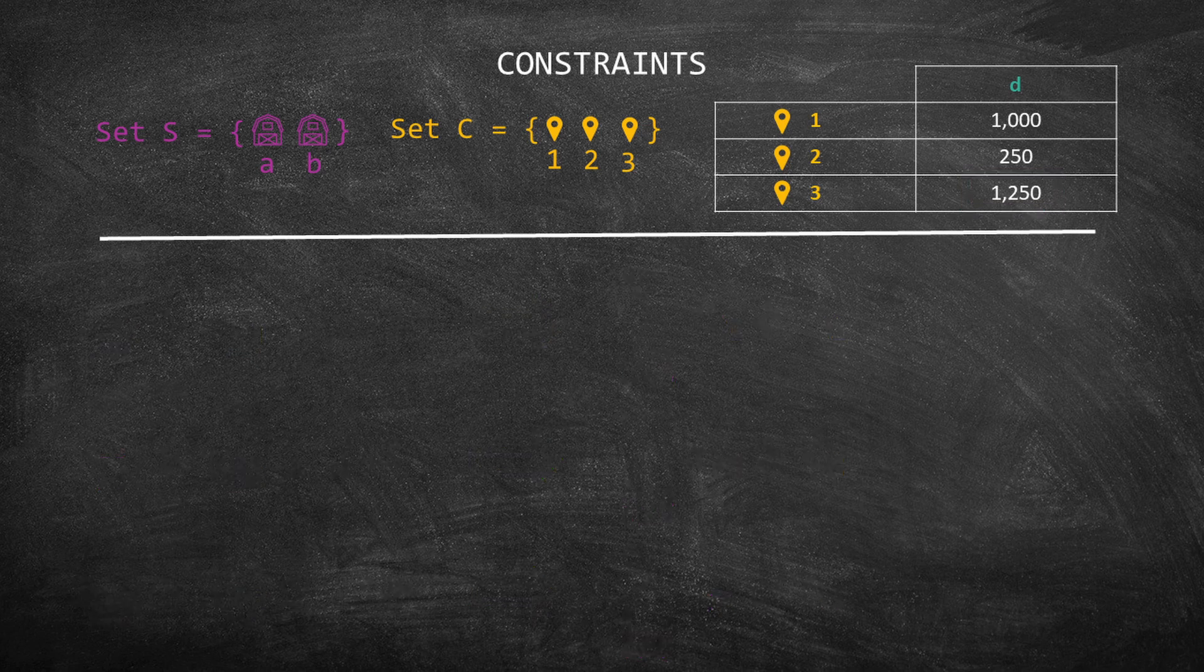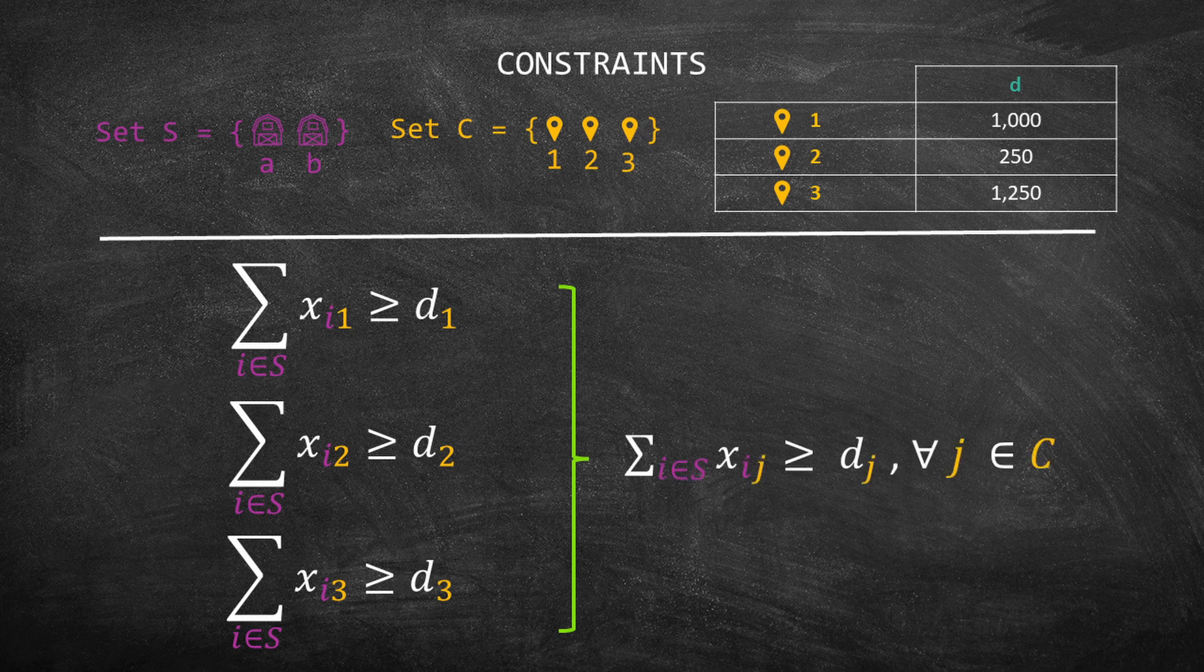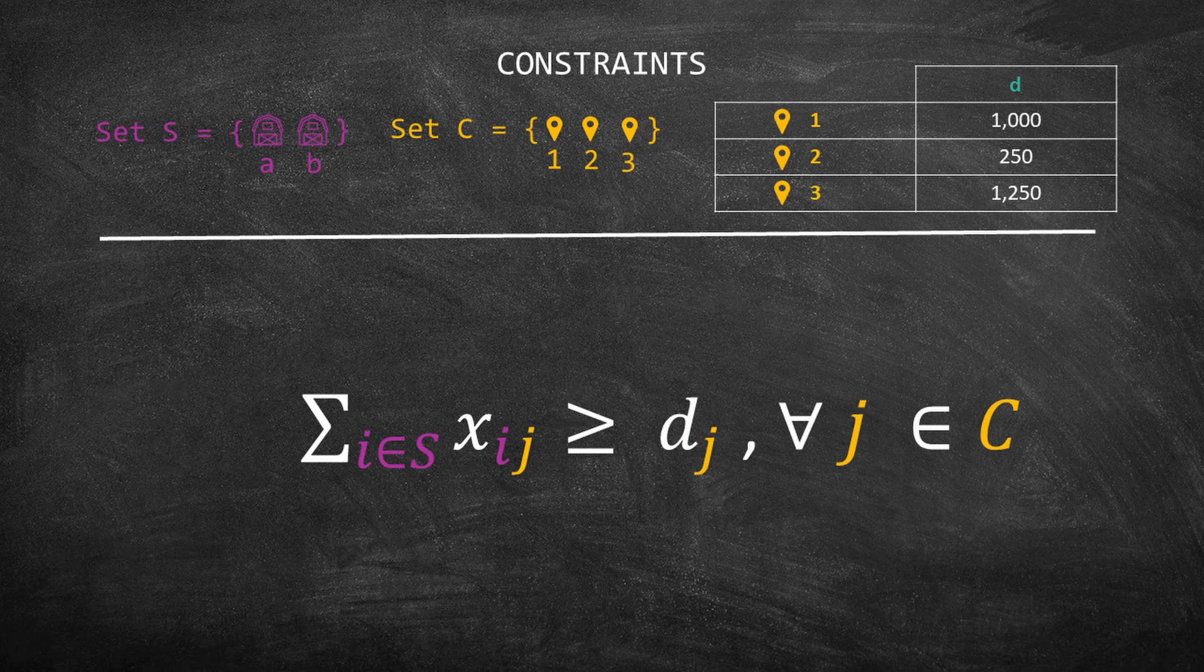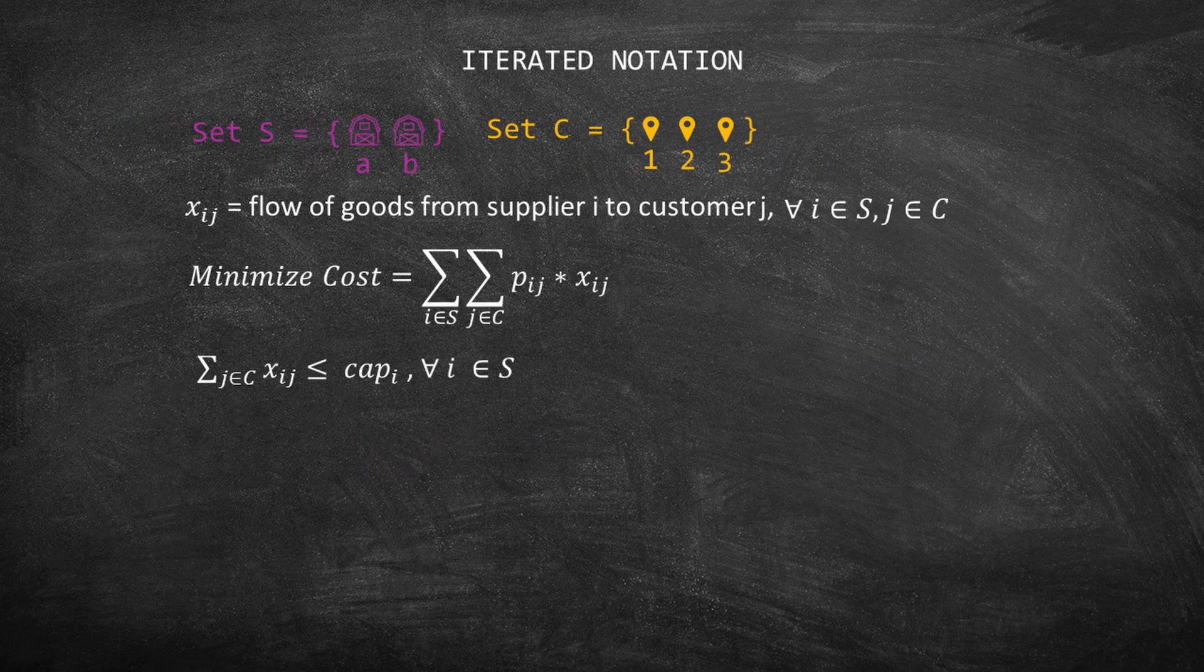Finally, we can combine those three equations into one. Notice that their structure is the same and what change is the set of customers. So we can replace the customers with the letter J and state that this constraint is for every J in the set of customers. Let me add this new constraint to the formulation.